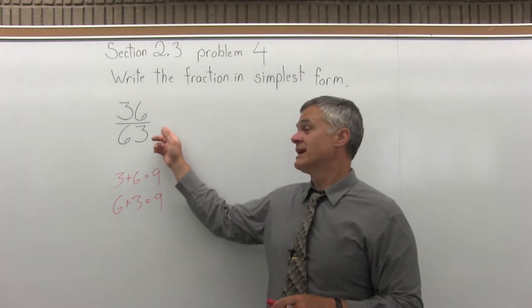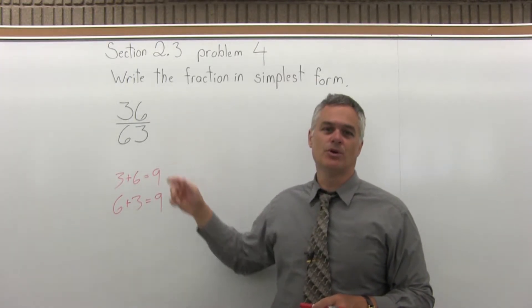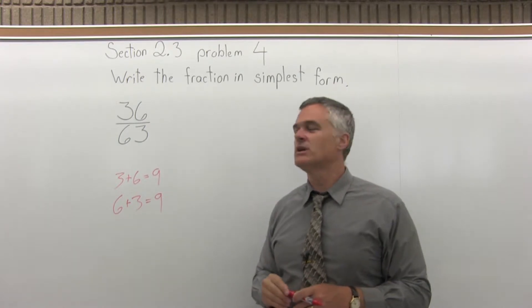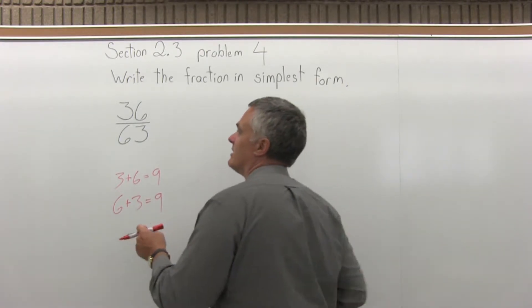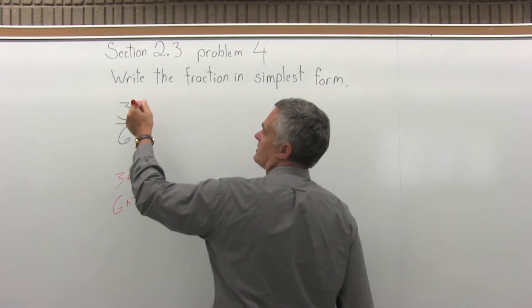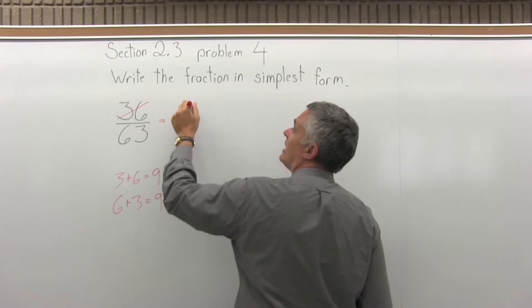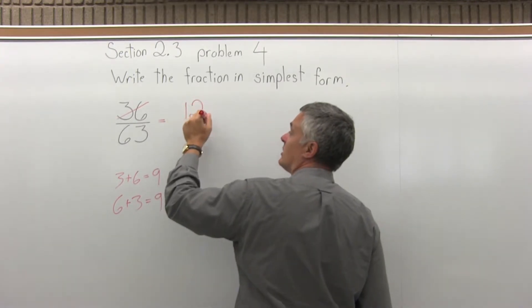Now I happen to recognize that I can actually divide 9 into both evenly. Let's say I don't realize that, 9 is a better choice. But if you don't realize that, go with anything, and if you're making progress, you'll eventually get to the end. So 3 goes into 36 12 times because 3 times 12 is 36.